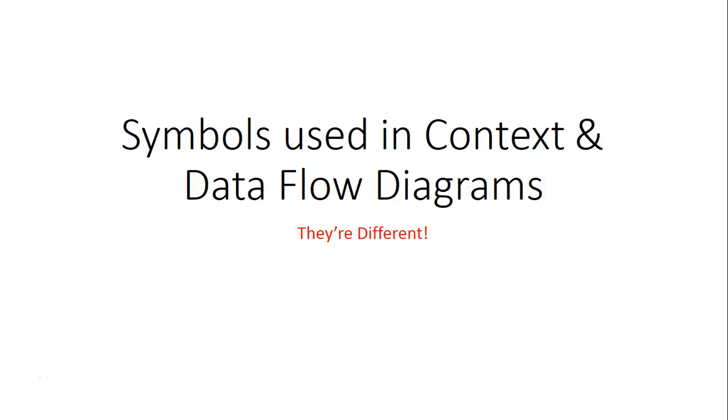Today we're going to have a look at symbols used in context and data flow diagrams, and although they may look the same, they're different. They're slightly different with what objects are used and sometimes what even the object means itself when used in that actual correct diagram.